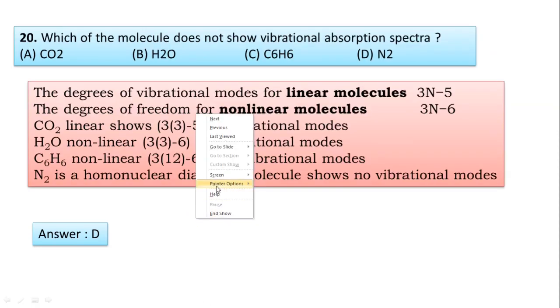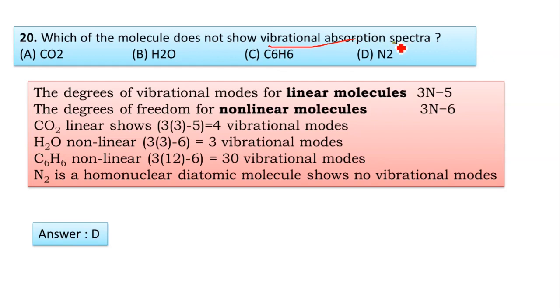Next question: Which of the following molecules does not show vibrational absorption spectrum? Here: carbon dioxide, water, C₆H₆, and N₂. The degrees of vibrational modes for a linear molecule is 3N-5. For a non-linear molecule it is 3N-6. We all know this. Now we take carbon dioxide—it is a linear molecule.